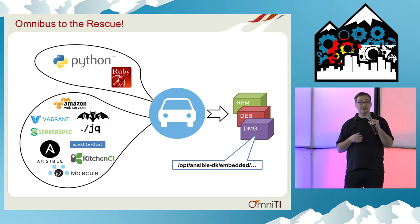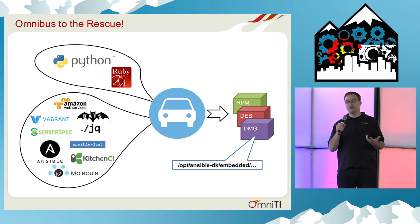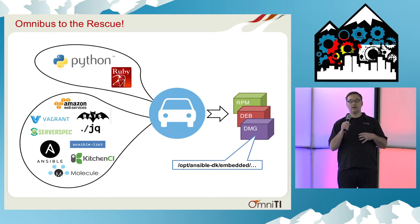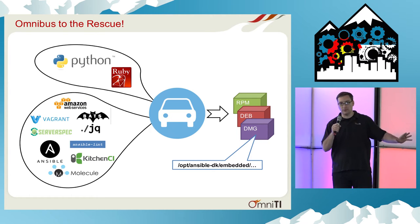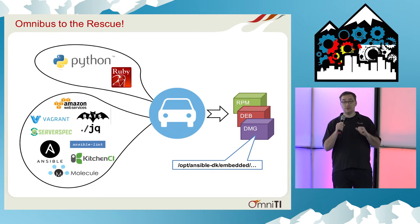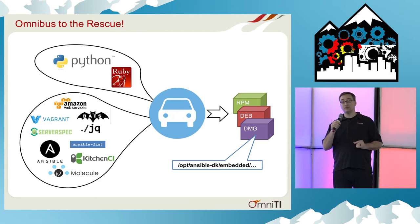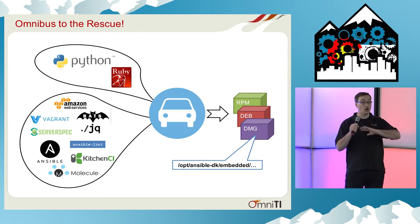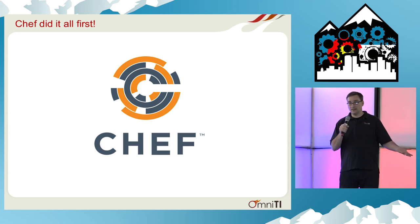So enter Omnibus. Omnibus is a system that allows you to compile a whole bunch of stuff, and at the end of it you get an operating system package — which is exactly what I wanted. So we created an Omnibus setup that includes a Python runtime and a Ruby runtime and all of these great testing tools. At the far end of the process, you get RPMs, DEBs, and DMGs for Mac. The best part is it all goes under /opt/ansible-dk and is linked to itself — there are no external dependencies, which is wonderful. There's nothing on the operating system at all.